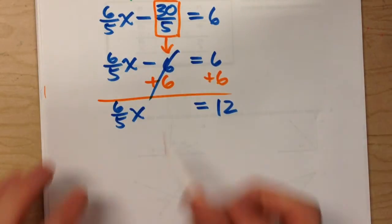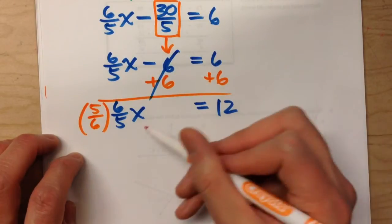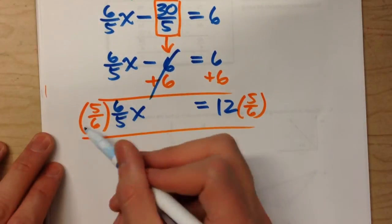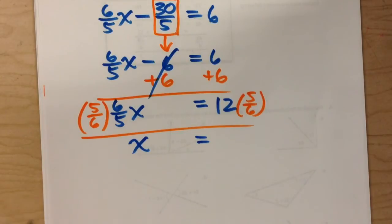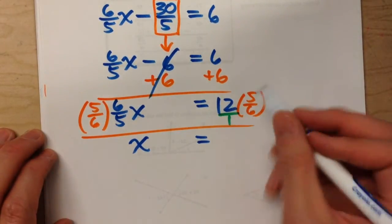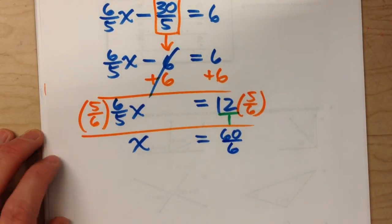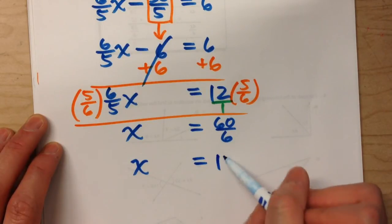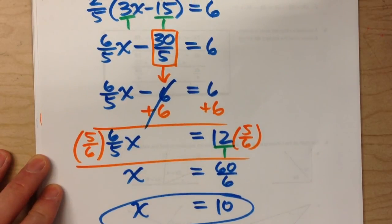Now multiply both sides by the reciprocal of 6 fifths, which is 5 sixths. This makes one whole x on the left. On the right, 12 times 5 sixths: put 12 over 1, top times top is 60, bottom times bottom is 6. Simplify: 60 divided by 6 is 10. So x equals 10. That is how we undo equations that have fractions in them.